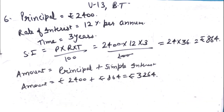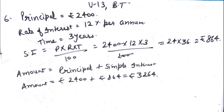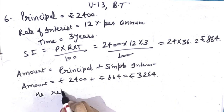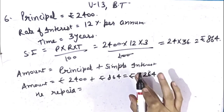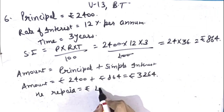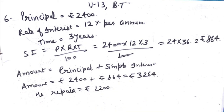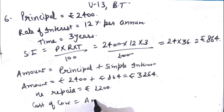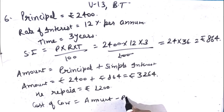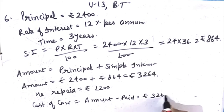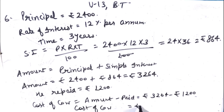After 3 years, the farmer needs to repay Rs.3,264. But the farmer paid only Rs.1,200 in cash, and gave a cow for the remaining balance. To find cost of cow: cost of cow equals amount minus amount paid. Amount is Rs.3,264 minus Rs.1,200 paid. Subtracting: 4 minus 0 is 4, 6 minus 0 is 6, 2 minus 2 is 0, 3 minus 1 is 2. Cost of cow is Rs.2,064.